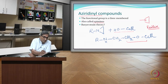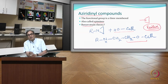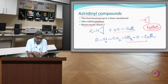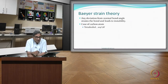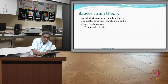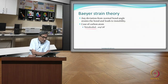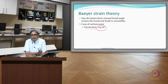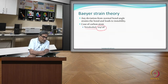These compounds are more reactive because of the Baeyer strain theory. This theory states that any deviation from normal bond angles introduces strain. Carbon, for example, forms four bonds in a tetrahedral structure with a bond angle of 109 degrees 28 minutes — this is the normal angle carbon prefers, as seen in methane.